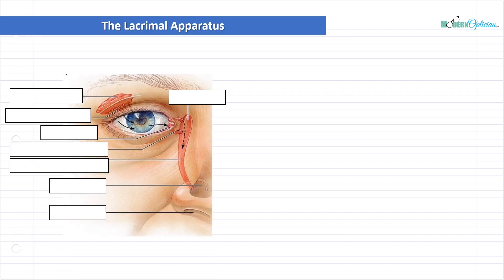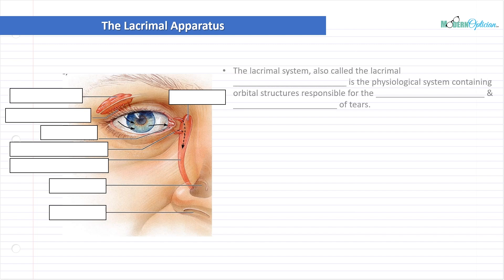We have a diagram here of an eye and we can see around the eyelids and near the nose that we have different structures. Obviously when you're looking at patients, you don't see all these structures - it's like we can see through the skin and see all these different little structures. This forms the lacrimal apparatus. The lacrimal system, also called the lacrimal apparatus, is the physiological system containing orbital structures responsible for the production and drainage of tears.